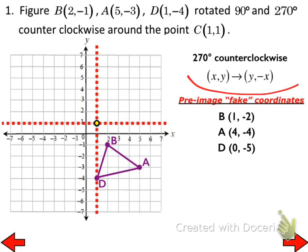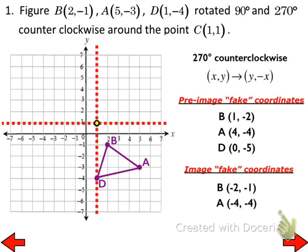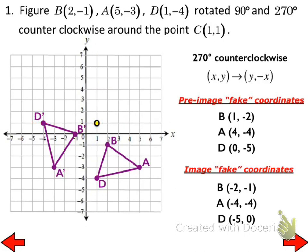We're using the 270-degree counterclockwise rule since we're now using (1, 1) as the origin. So my image fake coordinates: B double prime is (-2, -1), A double prime is (-4, -4), D double prime is (-5, 0). Plot those. When you are totally finished with everything in one problem, you should erase your fake coordinates — this is just a mathematical technique for rotating about a point other than the origin.